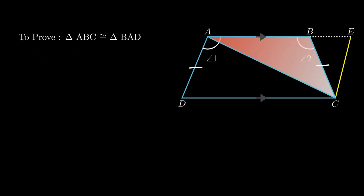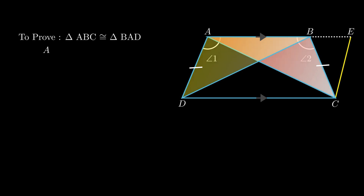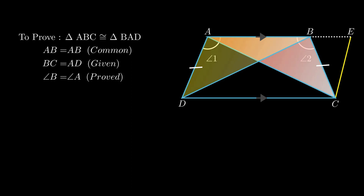For the third part, consider triangle ABC and triangle BAD. Side AB is common to both; BC = AD; and angle B = angle A as proved. By the side-angle-side rule, triangle ABC is congruent to triangle BAD. By corresponding parts of congruent triangles, segment AC = segment BD.